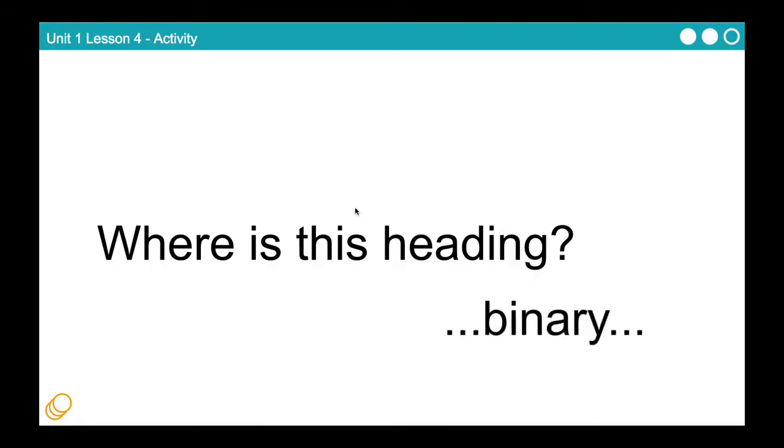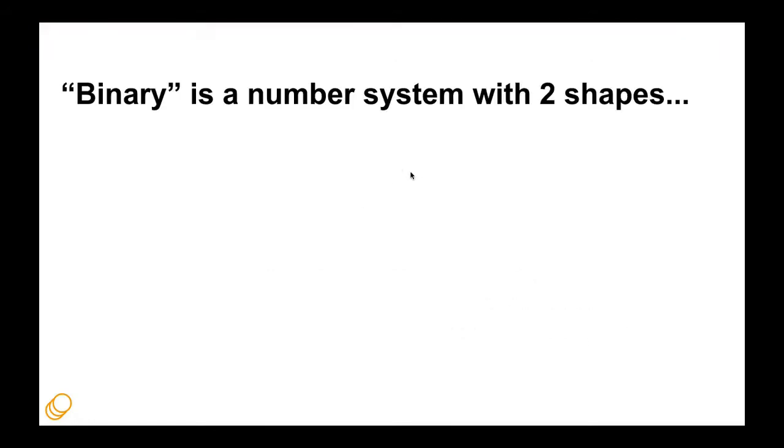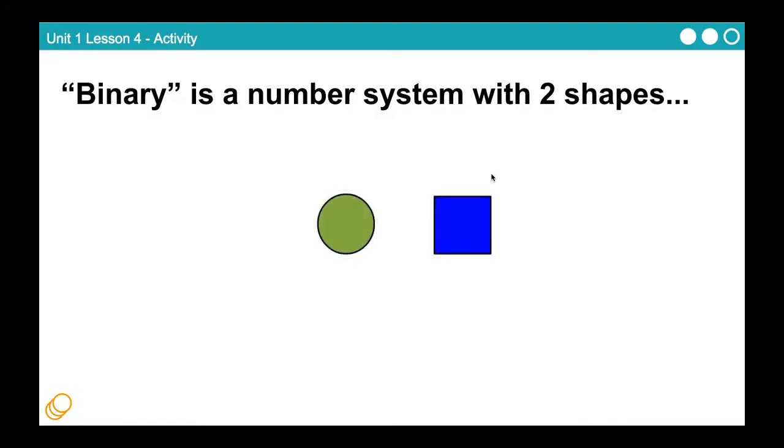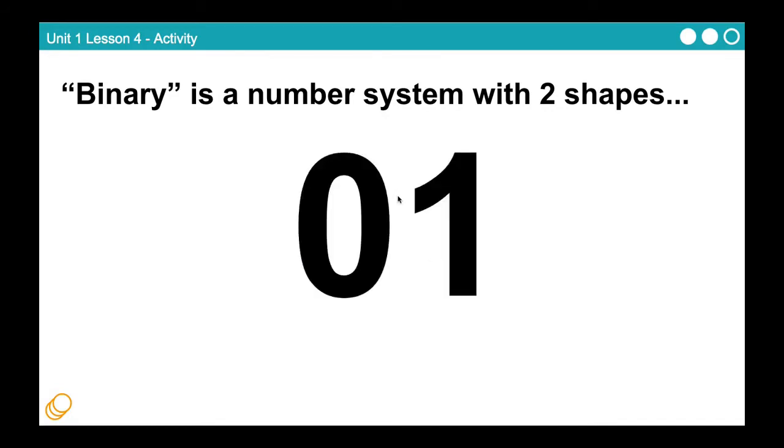So where is this heading? We're heading towards binary, as you may have guessed. Binary is just a number system that's identical to our 10-digit number system, in that they're both number systems. But it's only got two shapes. So that's why we've been focusing so heavily on circle and square. Circle square is just 0 and 1.